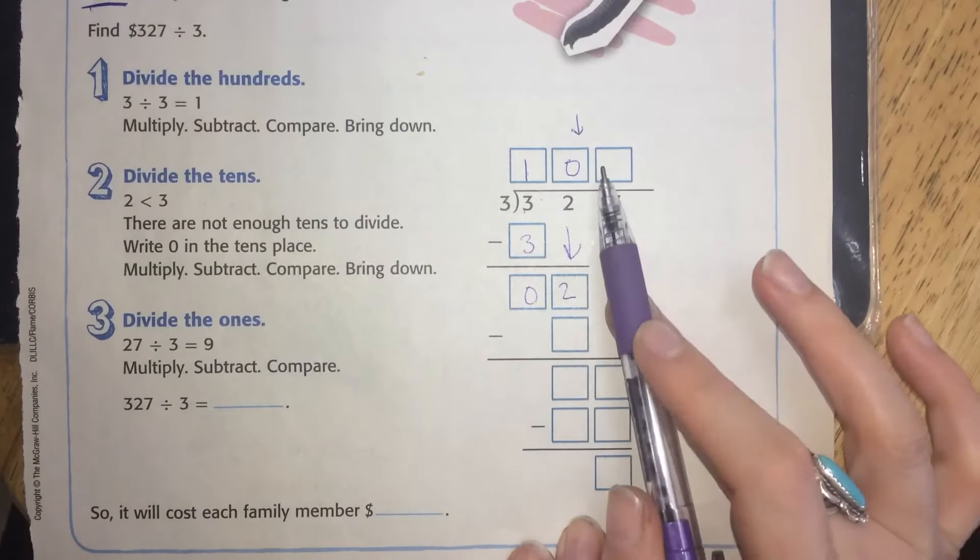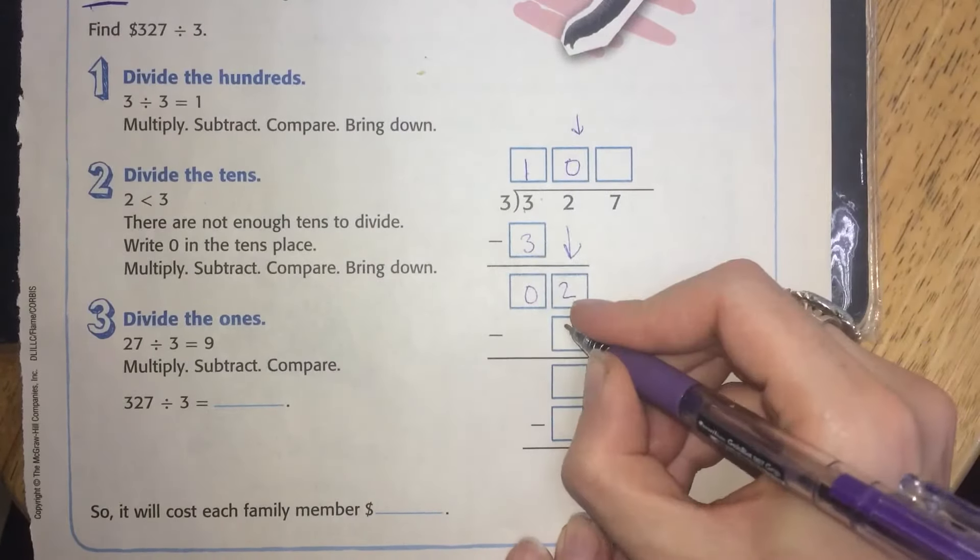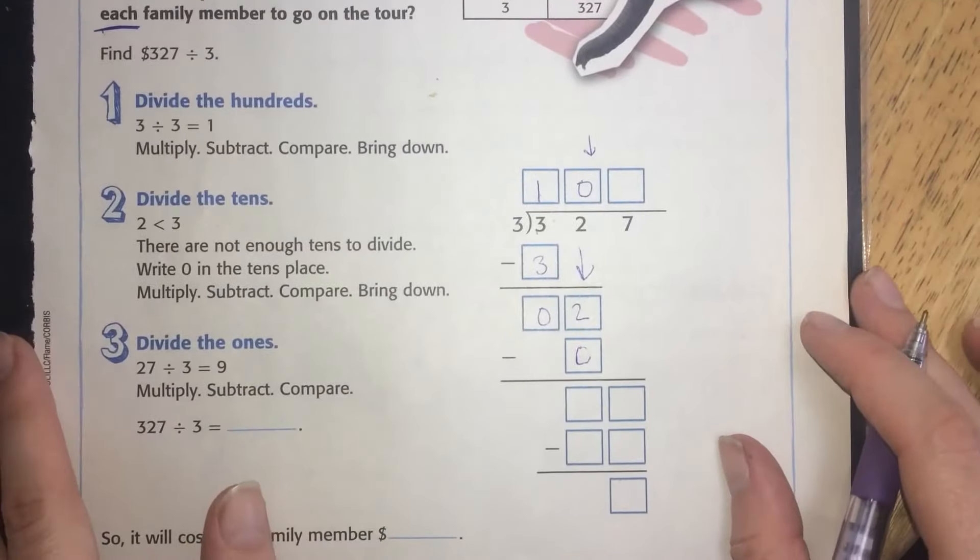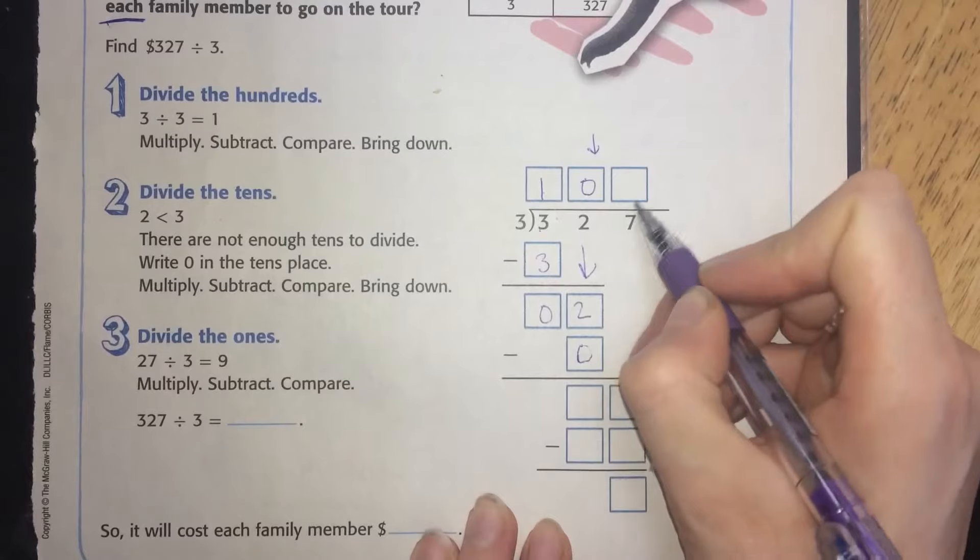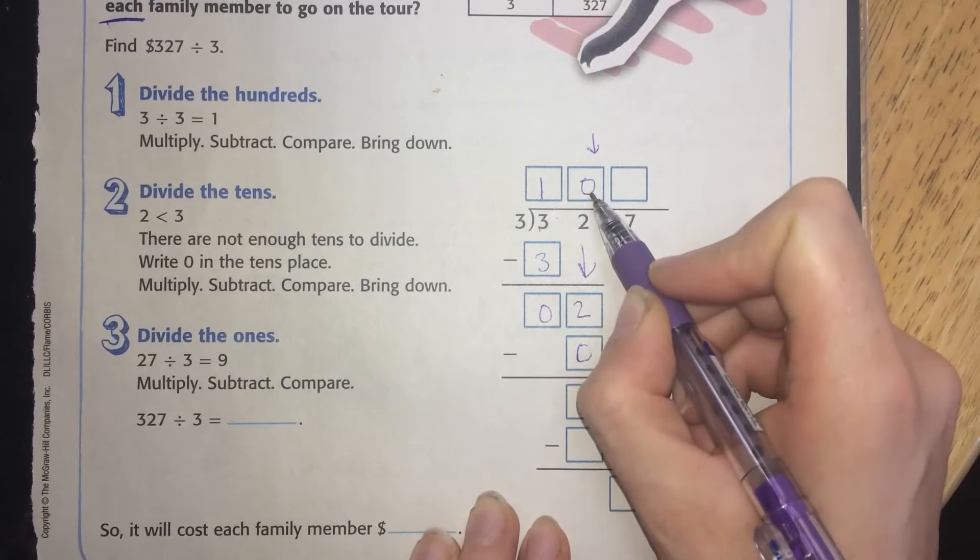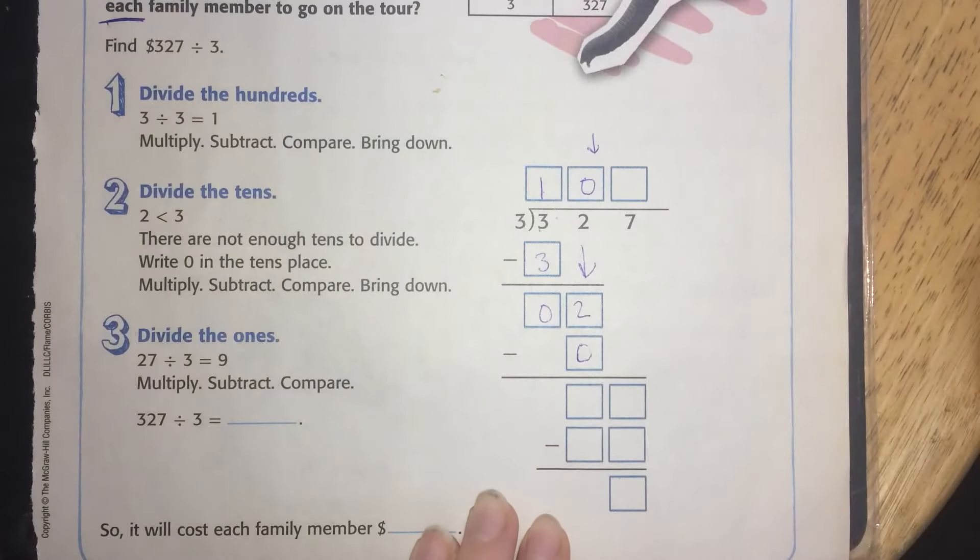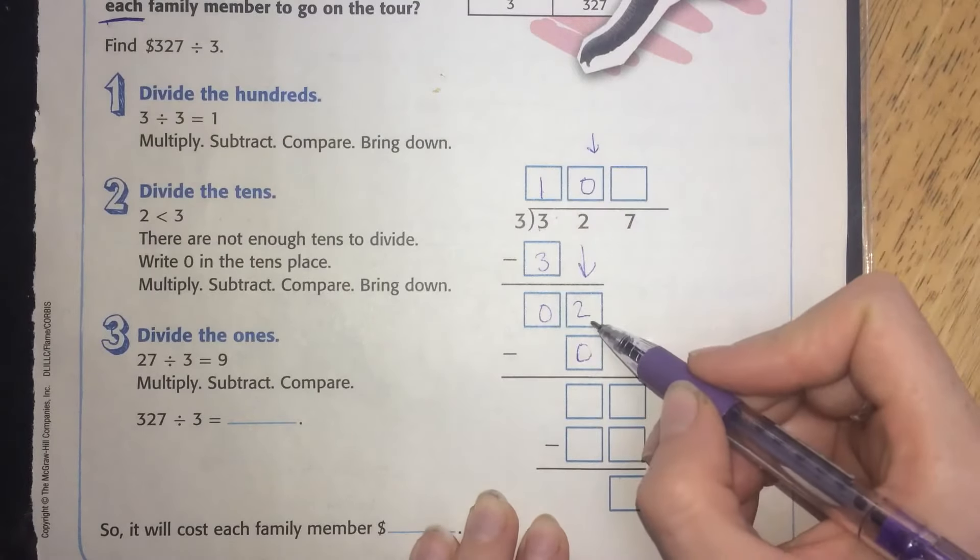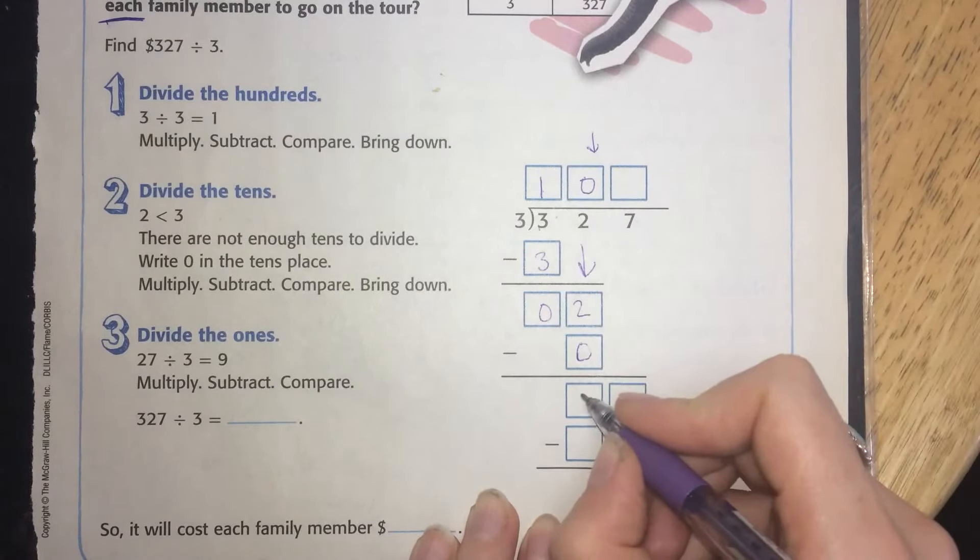If you multiply 0 times 3, you're going to get 0. But we can't just not have the 0 there, or else you'll be tempted to put this number in the tens place. So we have to keep the 0 there as a placeholder. 2 minus 0 is 2.